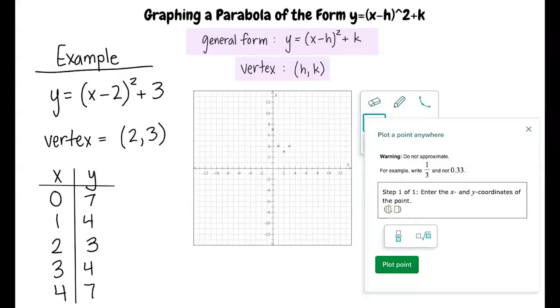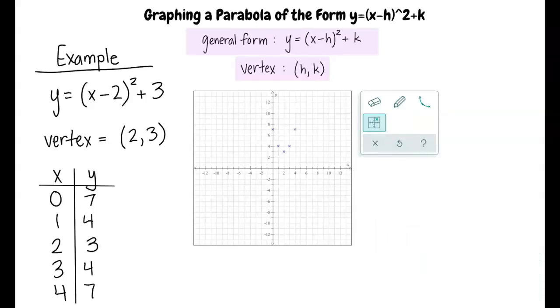Now, let's do the same to plot 4, 7. We now have the five points plotted. All that is left for us to do is connect them with a curve. ALEKS will automatically do this for you when you click the icon that shows three points connected by a curve. This is the graph of the function y equals x minus 2 squared plus 3.